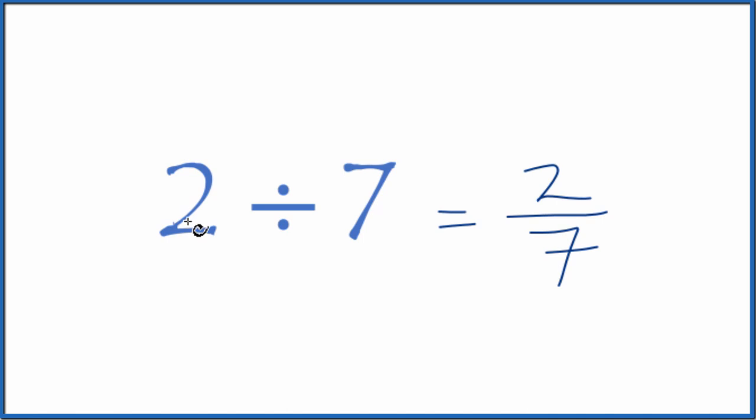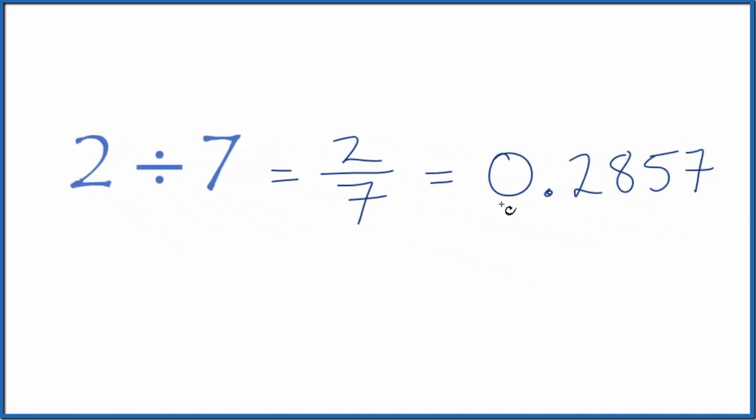We could also just take our calculator and divide 2 by 7. When we do that, we end up with 0.2857, and this keeps going. So let's round this to 0.286. So 2 divided by 7 equals the decimal 0.286, but this last number here is rounded.